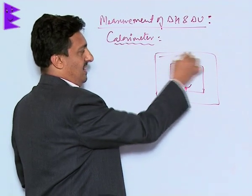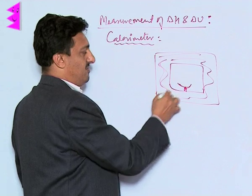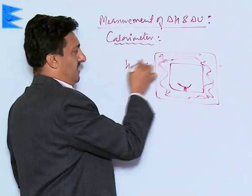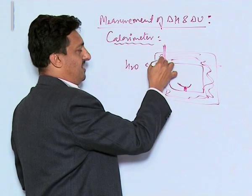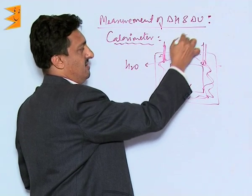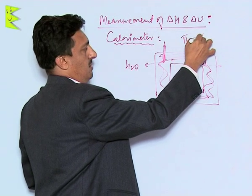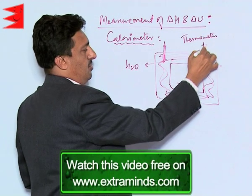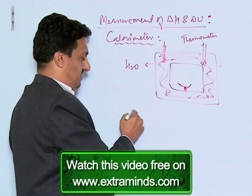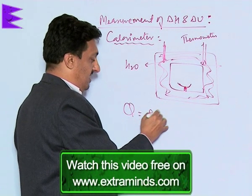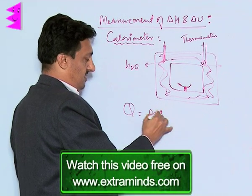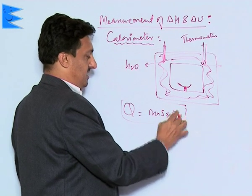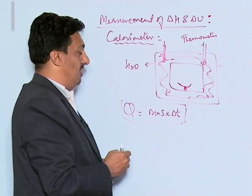The substance is ignited with electricity, and in between these two chambers we have water filled in. This water is continuously stirred with a stirrer, and we use a thermometer to measure the temperature change. The temperature change gives us q = msΔt, which tells us how much energy is being given out.